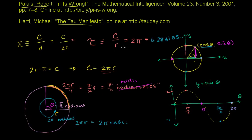You might say, pi has been around for millennia — why mess with such a fundamental number? The argument they make, and it seems like a pretty good argument, is that things seem a little bit more elegant when you pay attention to tau instead of half of tau.